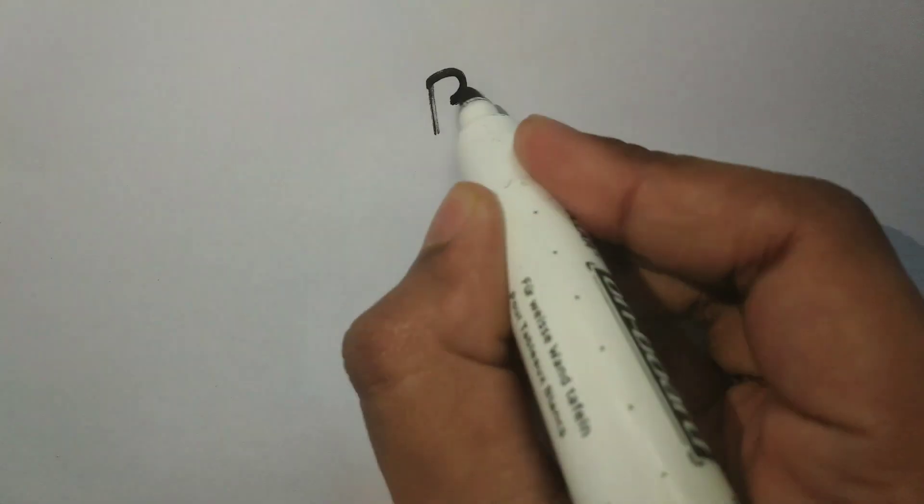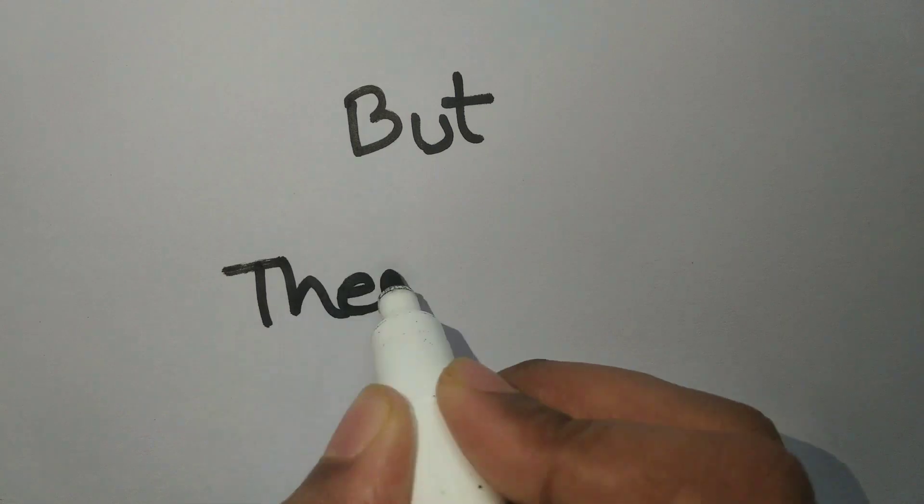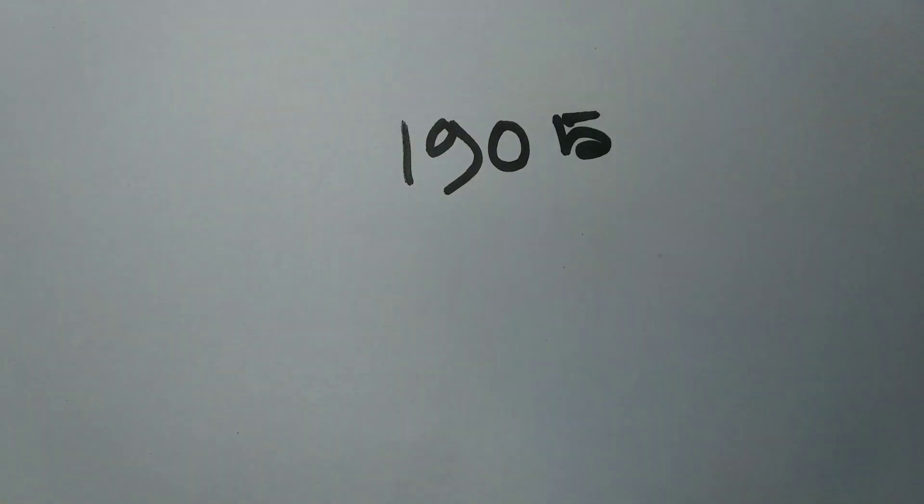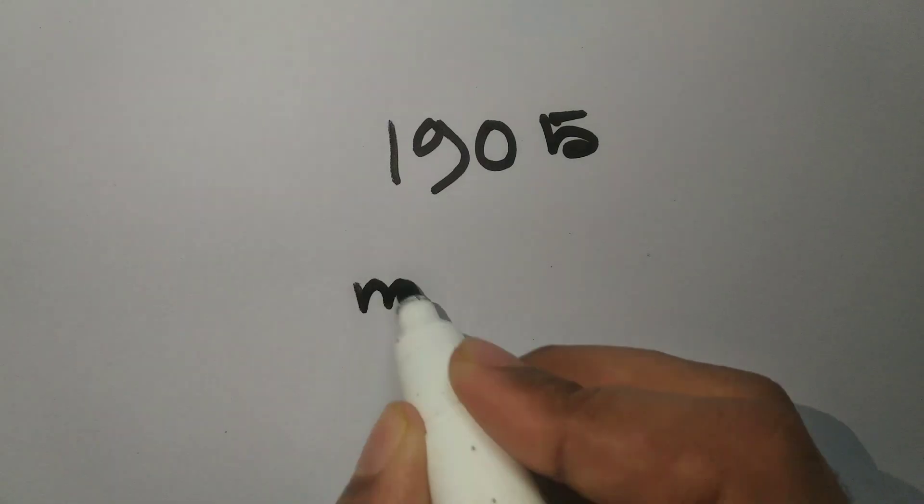But there's a problem. In 1905, when Einstein published his original paper, he wrote it something like this: m equals E over c squared. Now you're gonna ask, what's the difference?